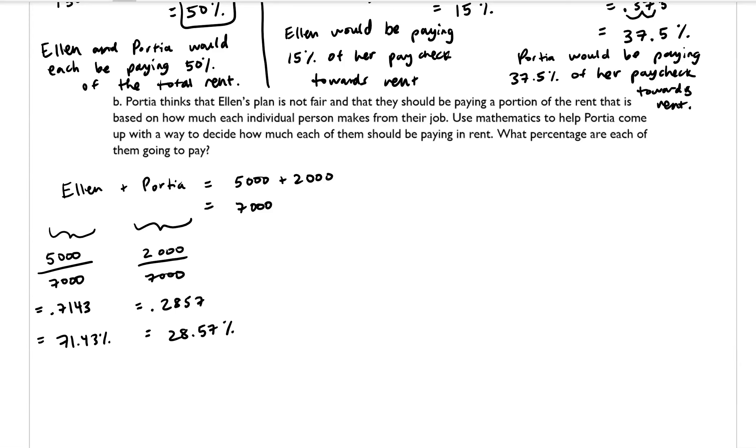And so another proposed plan that they could make is that they could then take these percentages and apply them to the $1,500 monthly rent, and they could split it up that way. So the way that we would calculate that is we know that Ellen makes 71.43% of their total income per month, and Portia makes 28.57%.